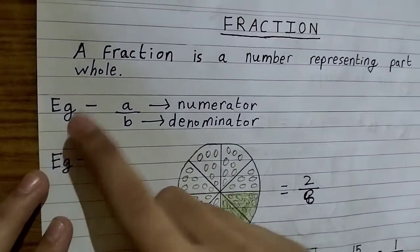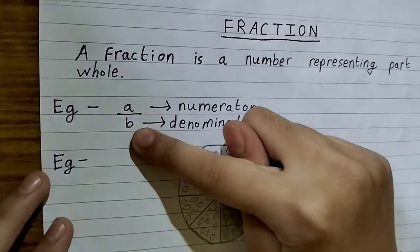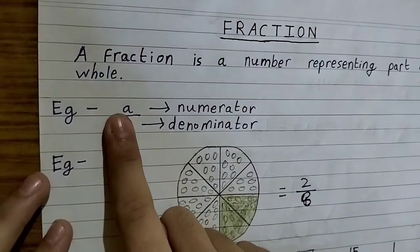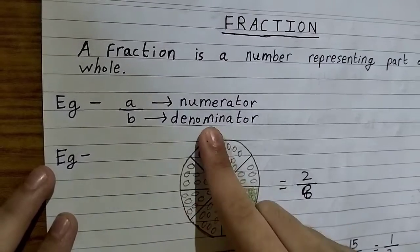The first example. Here we have A by B. In here, A is the numerator and B is the denominator.